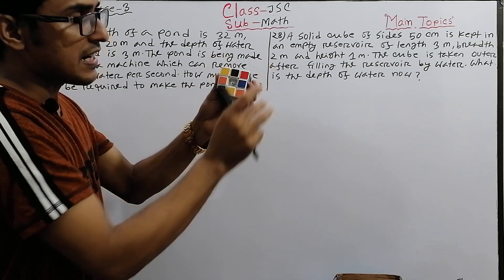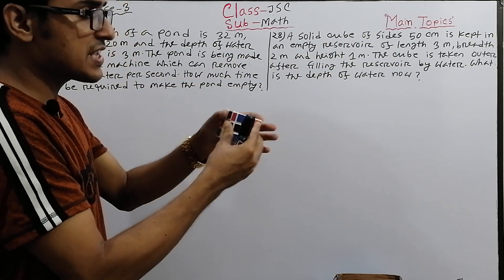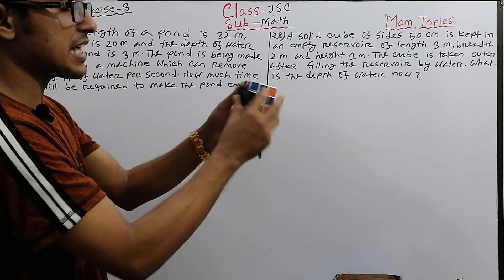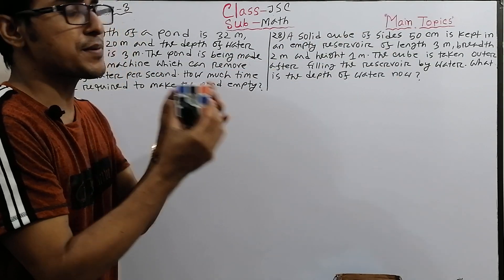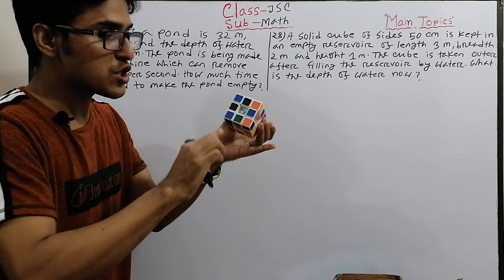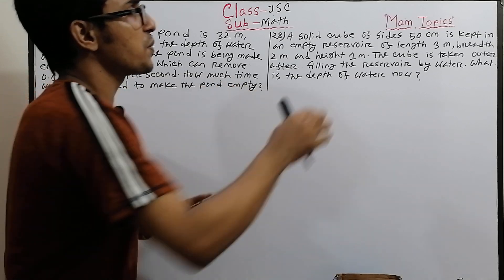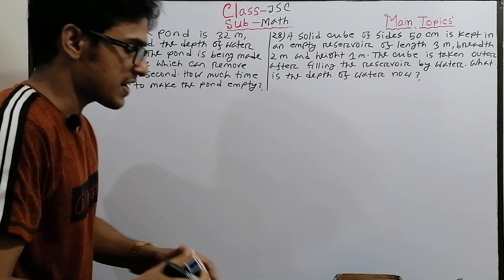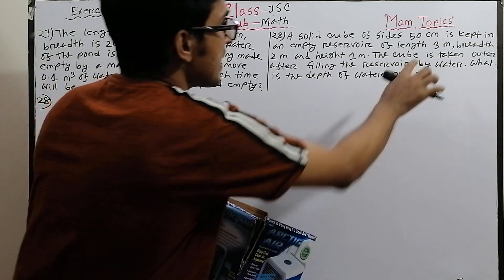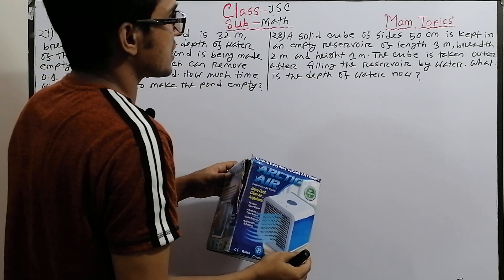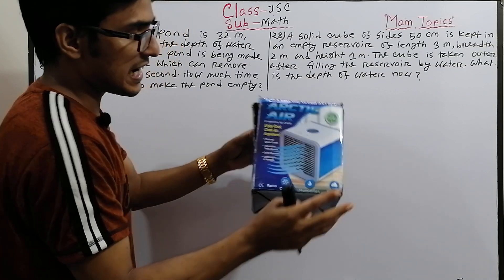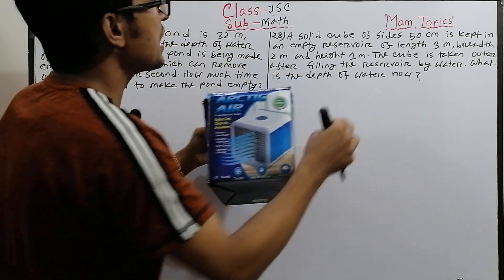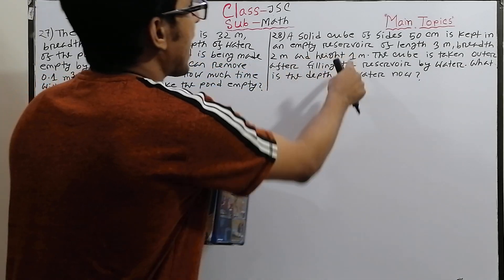The solid cube has side 50 centimeters. It is placed into an empty reservoir. The length of the reservoir is 3 meters, the breadth is 2 meters, and the height is 1 meter. We need to find the depth of the water when the reservoir is filled.